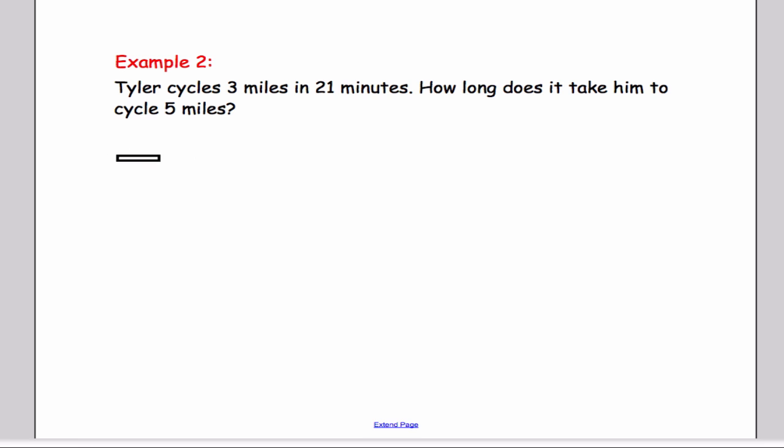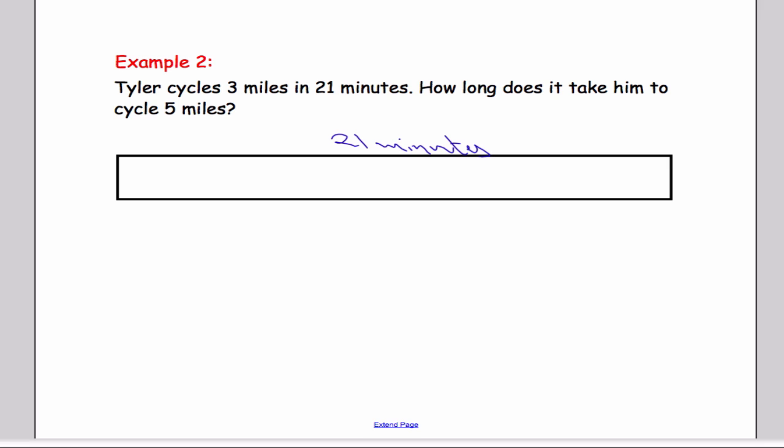We can set up the problem very similar to the way we did the last one. So we've got 3 miles in 21 minutes. We can say this is 21 minutes in total, and that's 3 miles. So I'm going to divide my rectangle into 3 boxes. We've got 21 minutes, 3 miles.